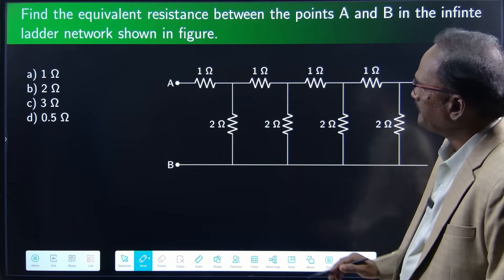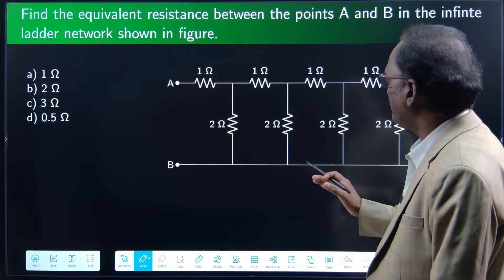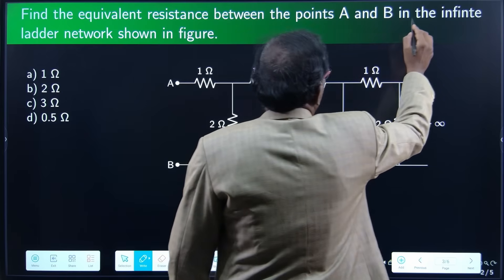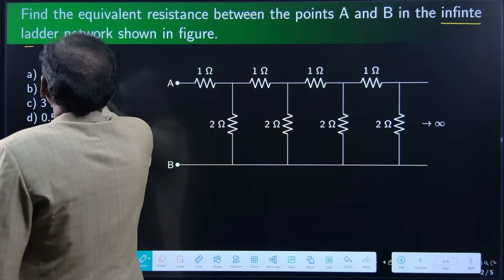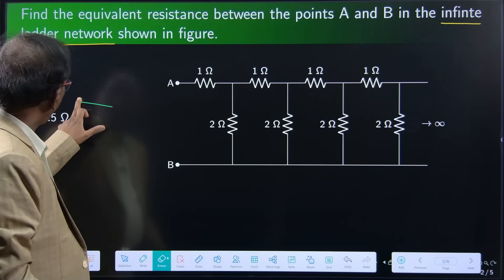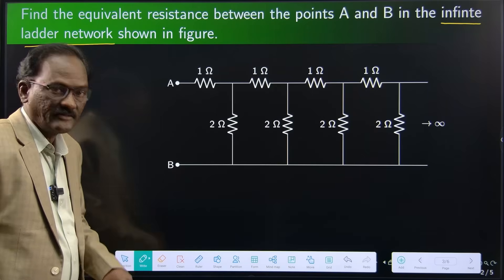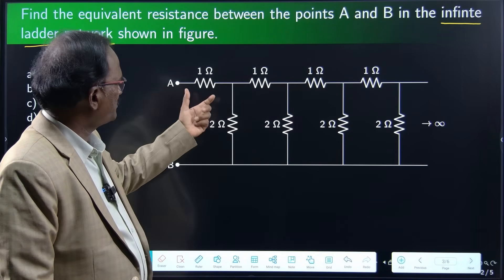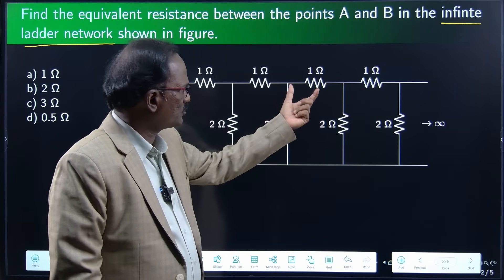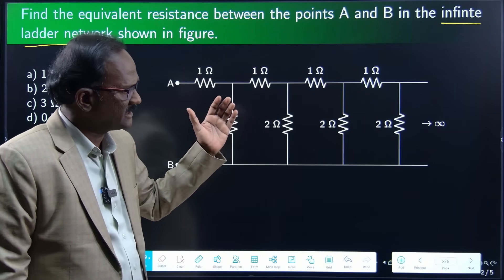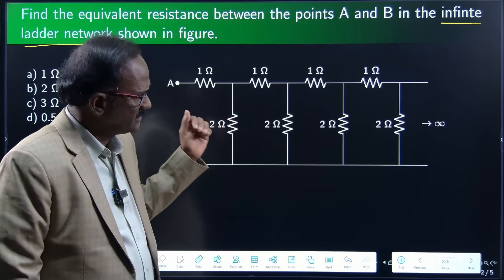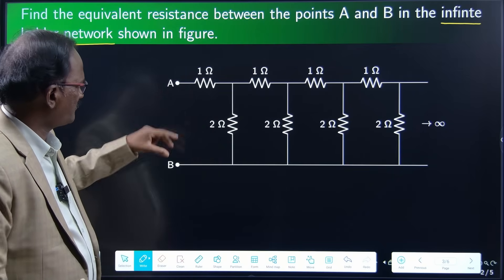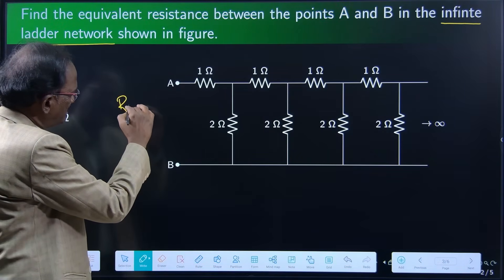The first problem is: find the equivalent resistance between the points A and B in the infinite ladder network. This is a special type of connection given in this problem. A series of such pairs — 1 ohm and 2 ohm — are connected an infinite number of times. It is going on and on to infinity. We have to find the equivalent resistance across A and B.